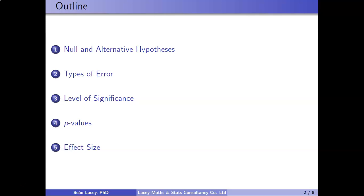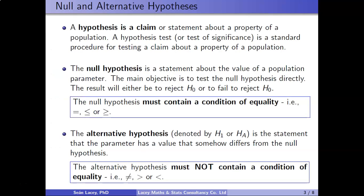When doing a hypothesis test, essentially what you're doing is testing a claim. A hypothesis is a claim, and whenever you think of making a claim there's always going to be the claim and then the opposite. For example, I could say this room is hot, and the opposite would be this room is not hot, or the treatment works versus the treatment does not work. So in statistics whenever we're doing a hypothesis test there are always going to be two sides to the claim, meaning there are actually two hypotheses.